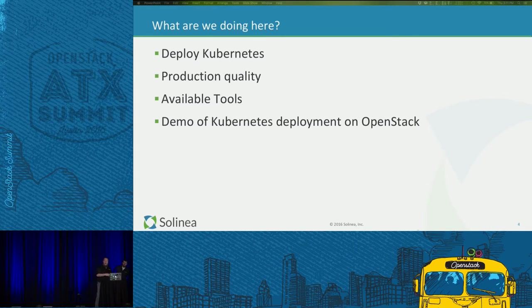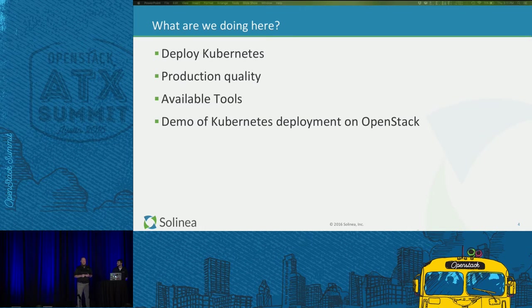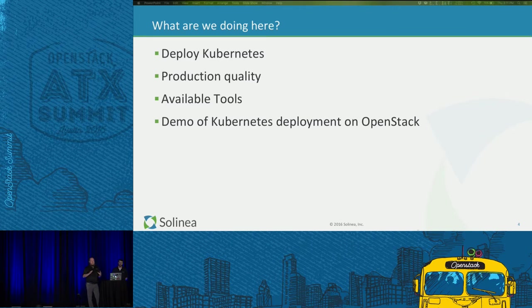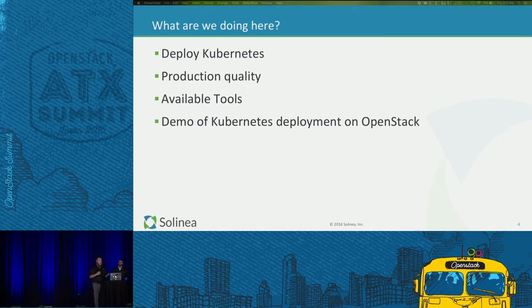Some of our work within the past year has been helping several clients figure out the space of Kubernetes and how to best deploy Kubernetes on top of their existing infrastructure. The clients we're really working with right now have very large OpenStack environments, some of them thousands of nodes across the world. They're looking at how to adopt containers and some of these new architectures on top of their existing infrastructure.